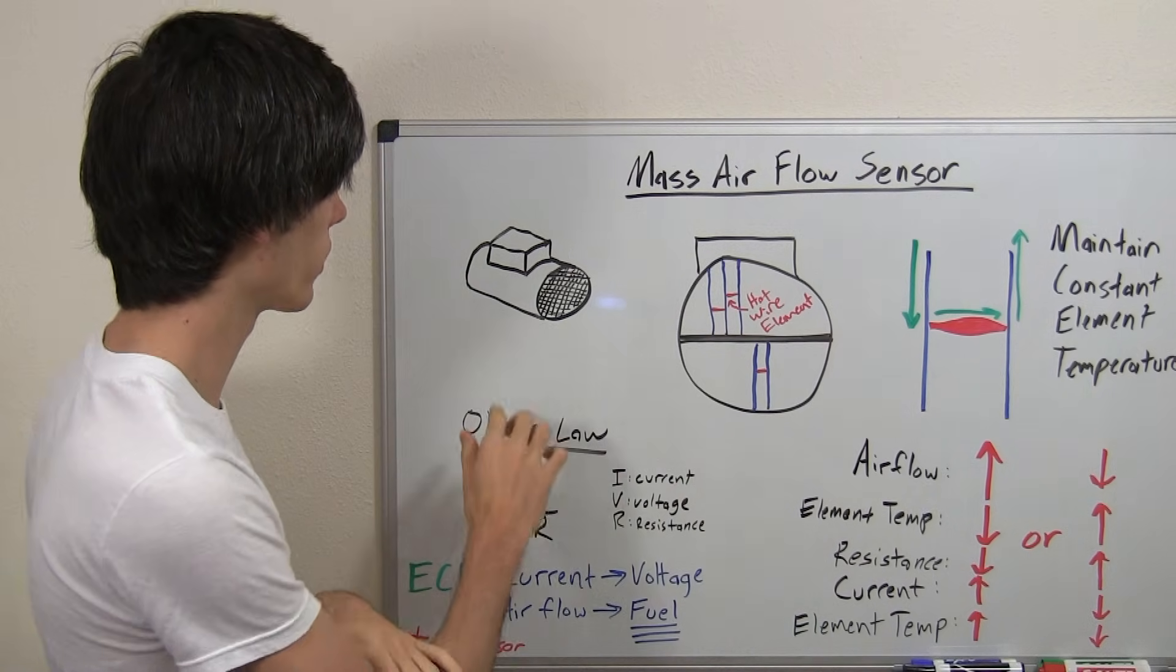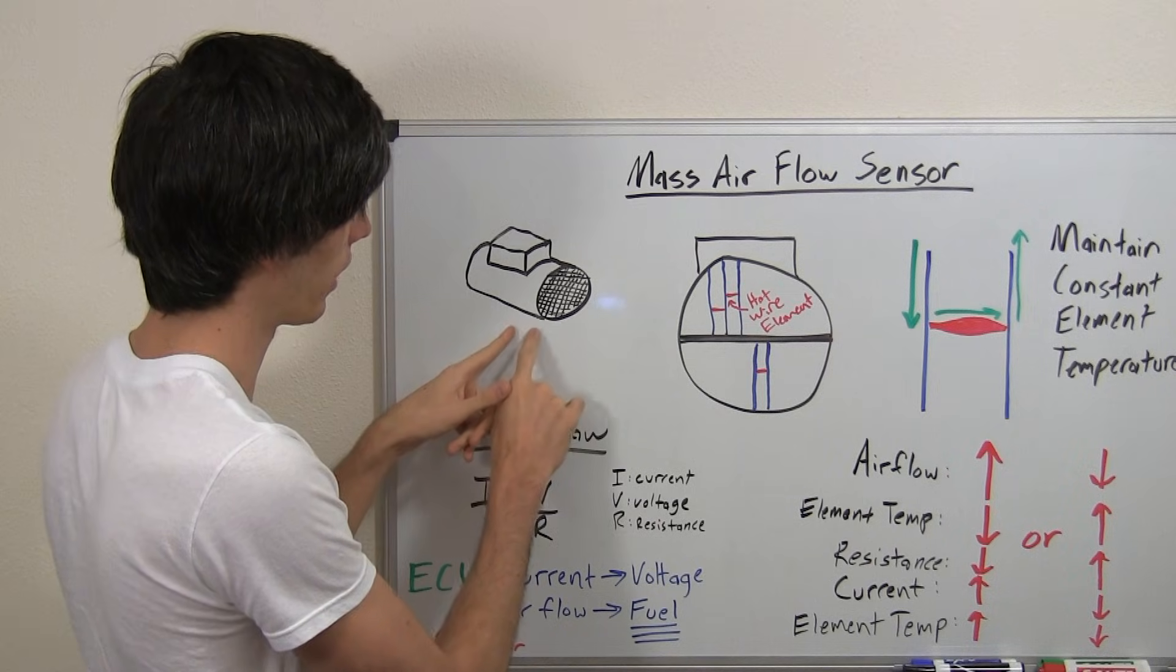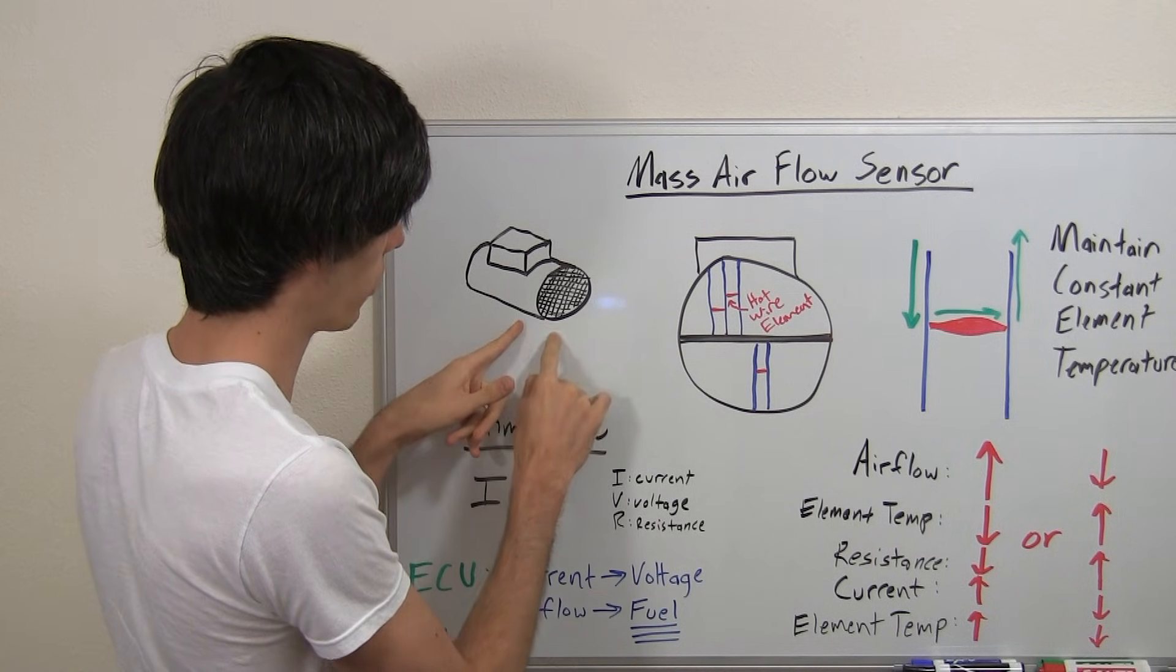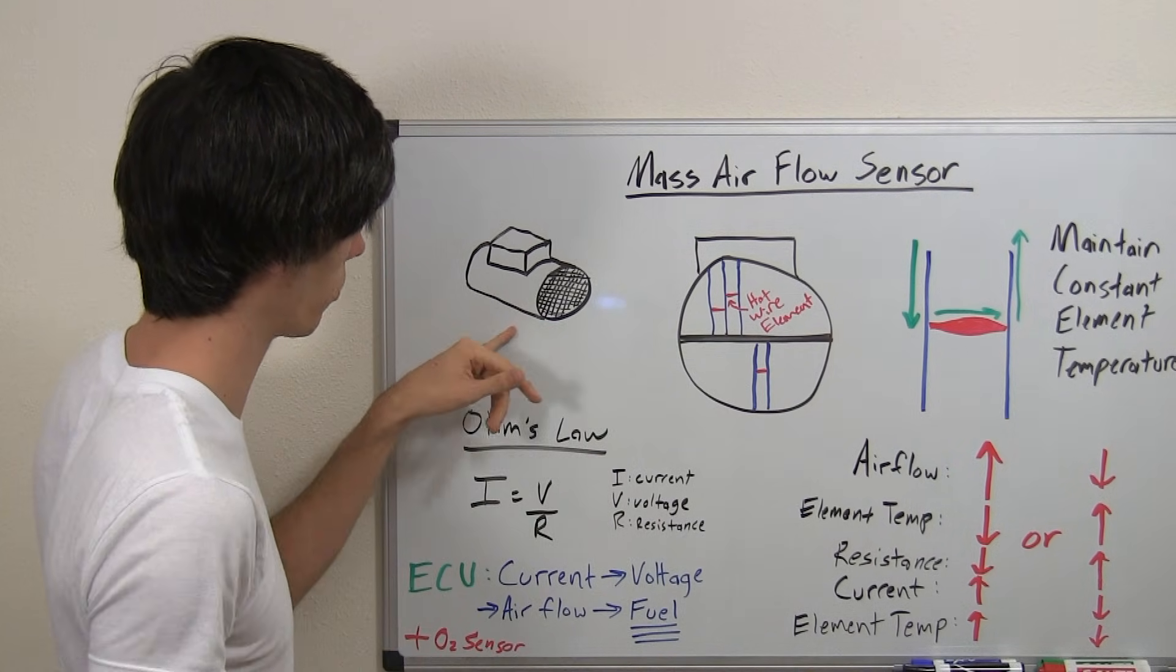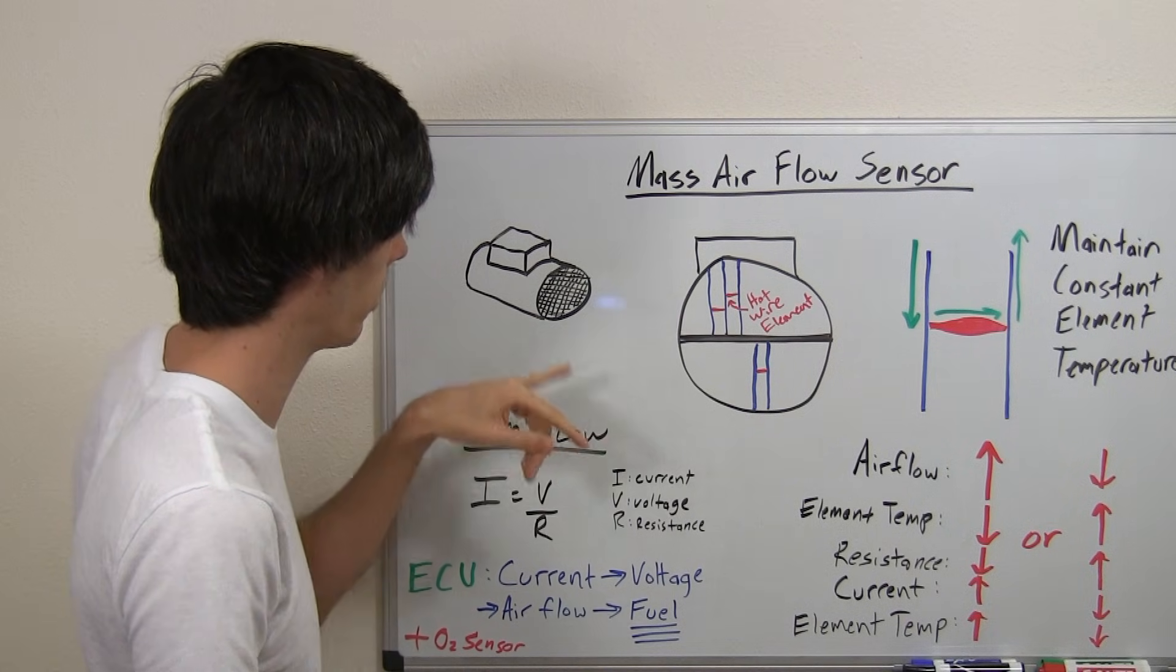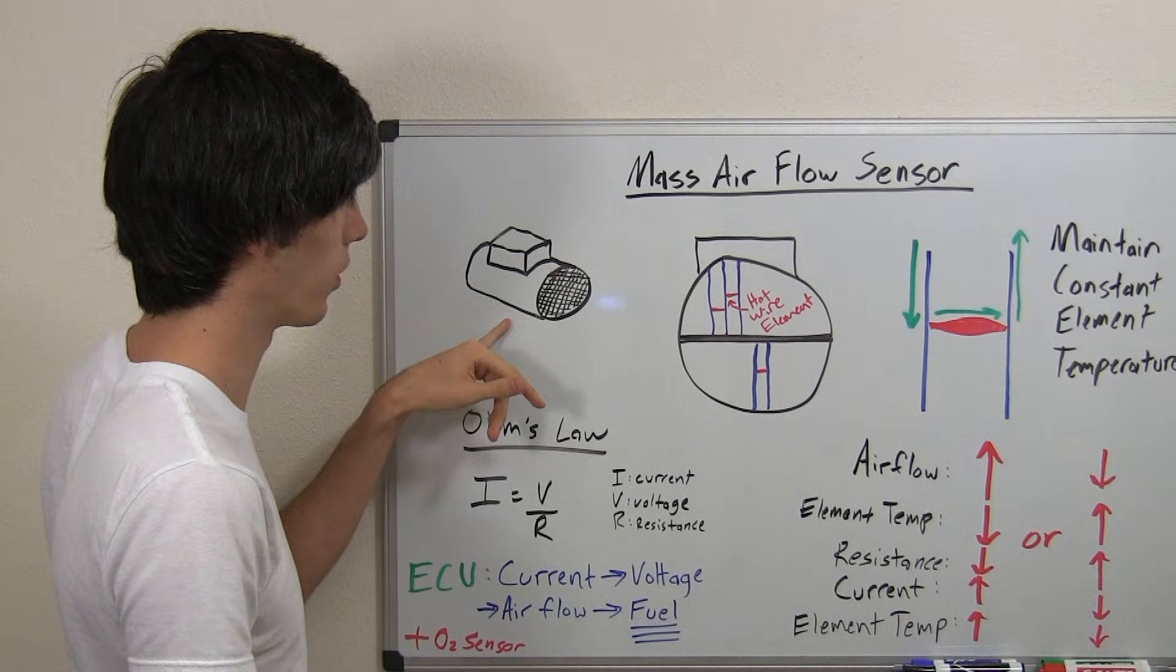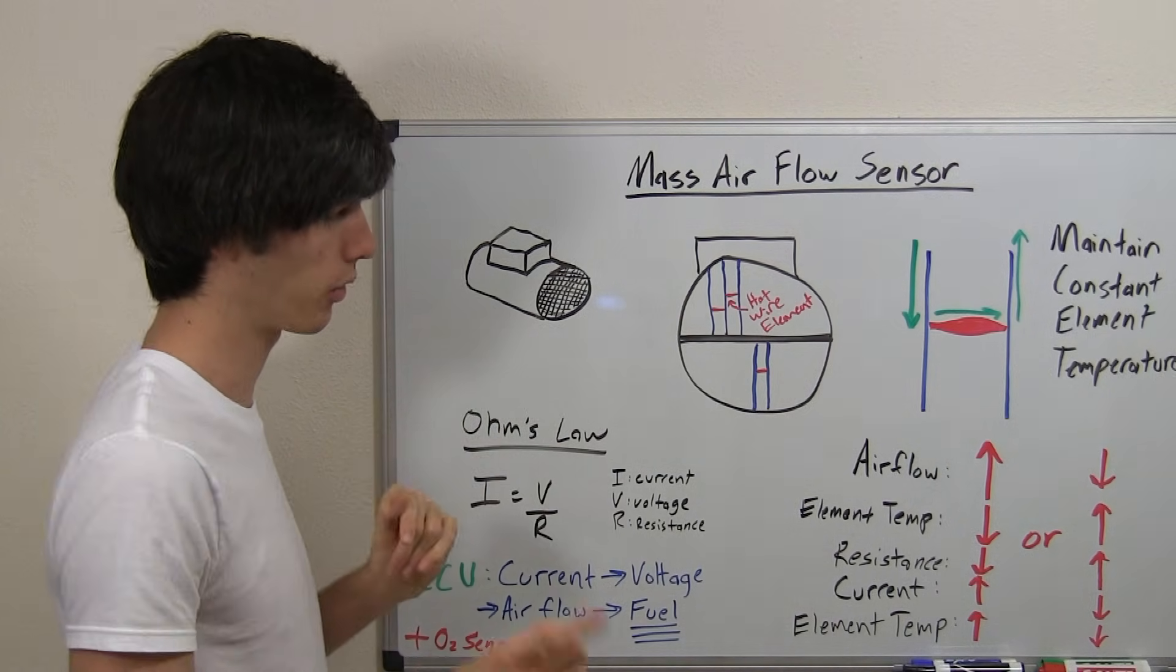The mass airflow sensor is going to look like this and it's going to be mounted behind your air filters. I'll show you where this would be on my car. My car actually doesn't use this - it uses something different - but I'll explain that later.